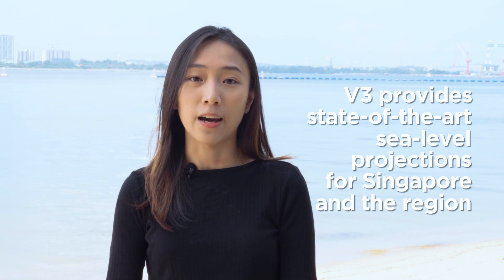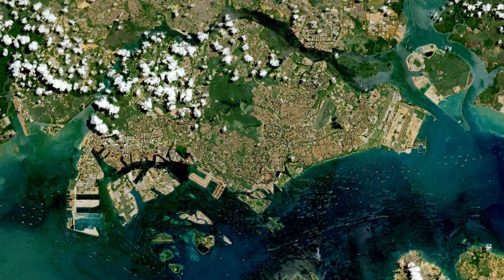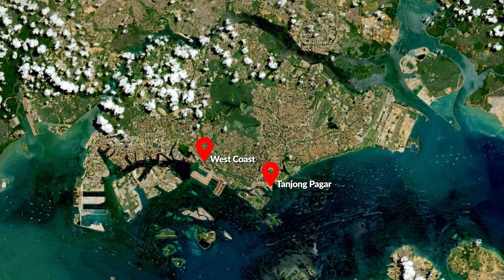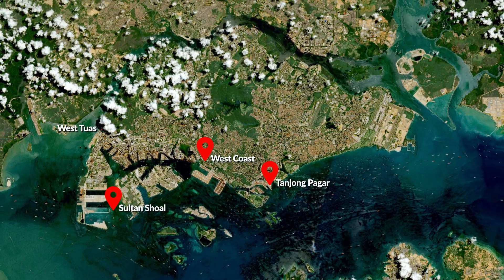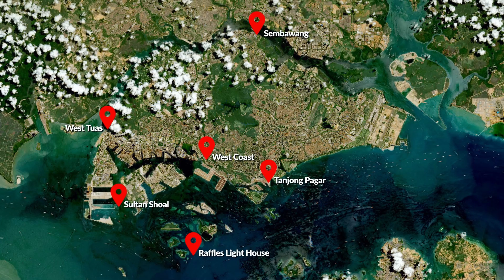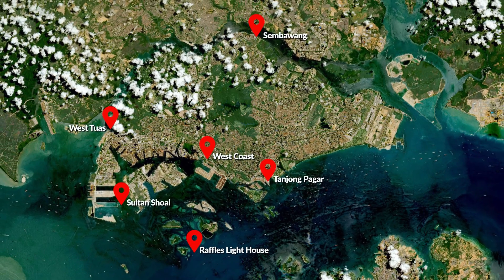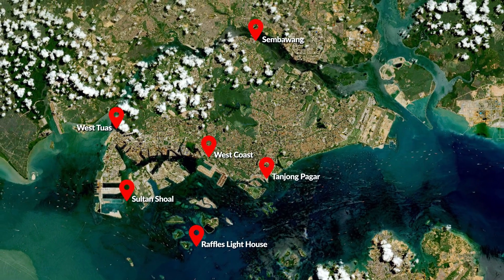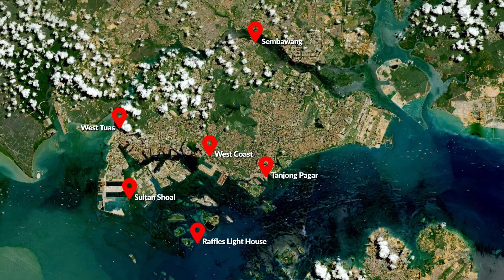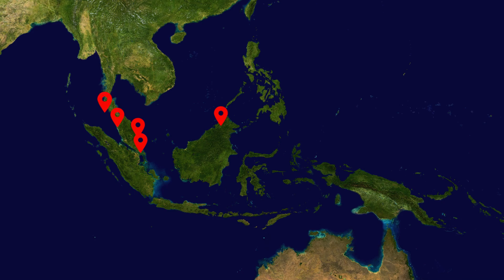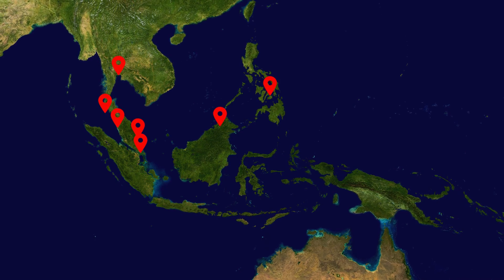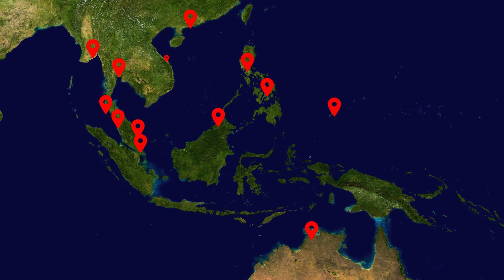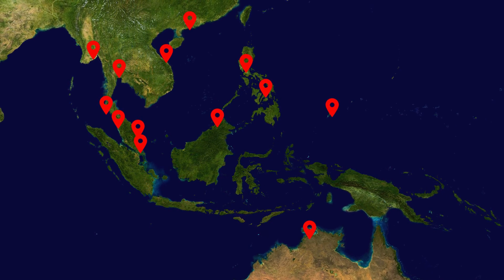Using improved data, V3 will provide past and future sea level results for six tide gauge locations in Singapore for the coming decades, up to the year 2300. V3 will also inform us on past and future sea level change in the region surrounding Singapore.